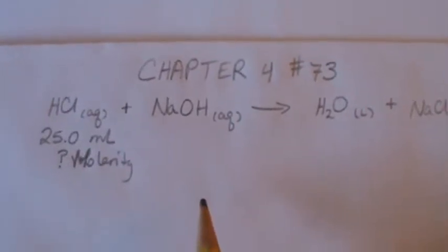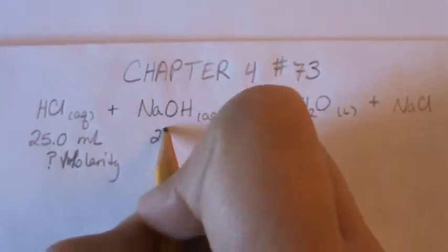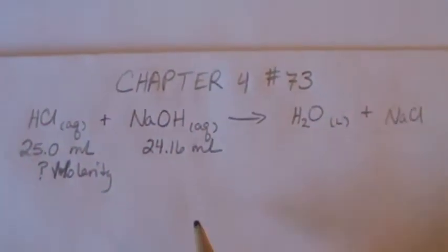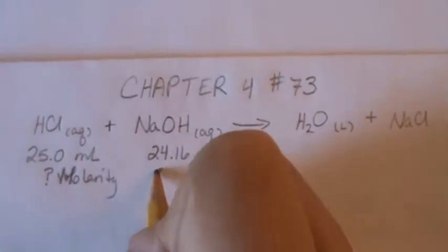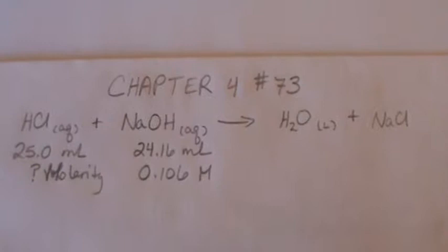And then we have our NaOH, and we know what we have for sodium hydroxide. We have 24.16 milliliters of sodium hydroxide, and we have 0.106 molar sodium hydroxide.